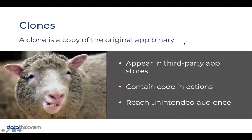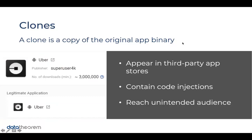Diving deeper: a clone is a copy of an original app binary and tends to appear mostly in third-party app stores. The most common malicious activity we see is code injection — malicious code added to the app — and then it reaches unintended audiences. Here's an example: on the bottom is the legitimate Uber app with the correct icon and name; on the top is a third-party app store with a cloned version of the Uber app — same icon, same name, but the publisher ID is 'super user 4k.' That store even reported 3 million potential downloads, a huge customer impact for Uber.